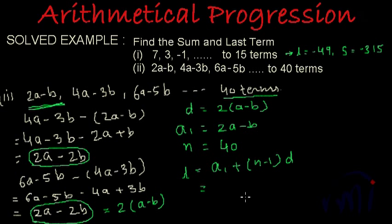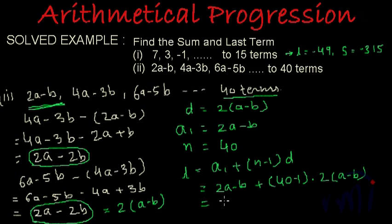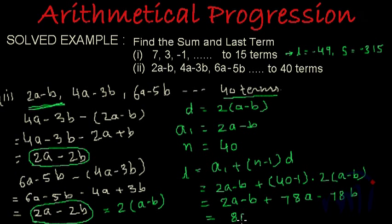Substituting a1 as 2a minus b, plus (40 minus 1) multiplied by 2(a minus b): this becomes 2a minus b plus 39 times 2, which is 78a minus 78b. Adding: 78a plus 2a is 80a, and minus 78b minus b is minus 79b. So the last term l equals 80a minus 79b.